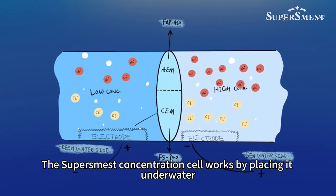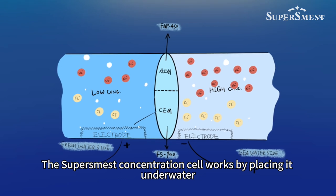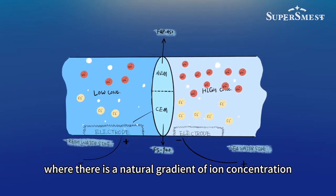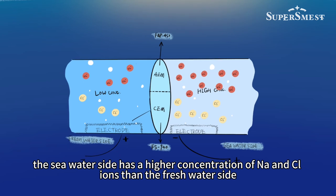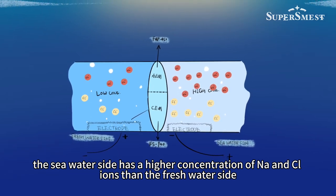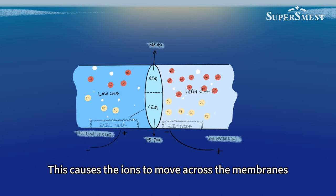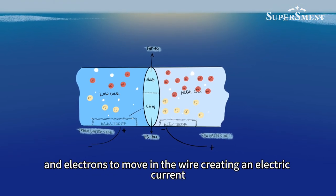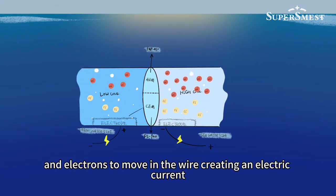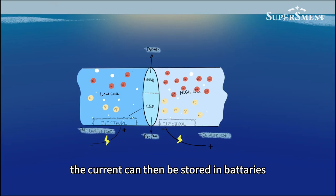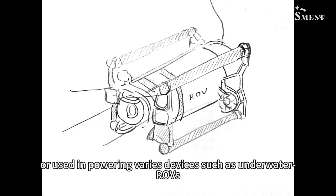The super-smast concentration cell works by placing it underwater, where there is a natural gradient of ion concentration. The seawater side has a higher concentration of sodium and chlorine ions than the freshwater side. This causes the ions to move across the membranes and electrons to move in the water, creating an electric current. The current can then be stored in batteries or used to power various devices such as underwater ROVs.